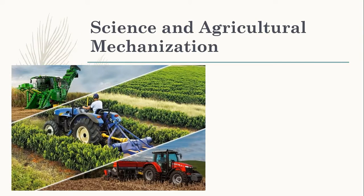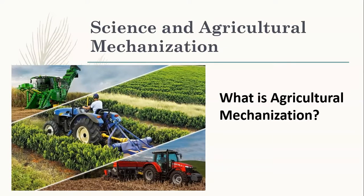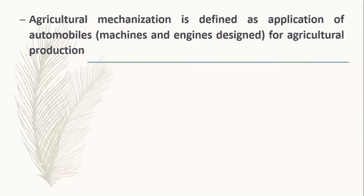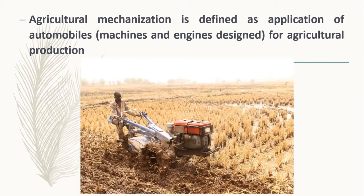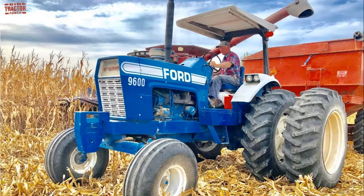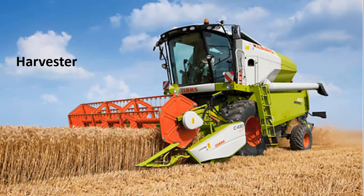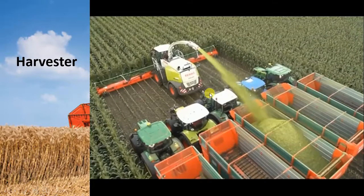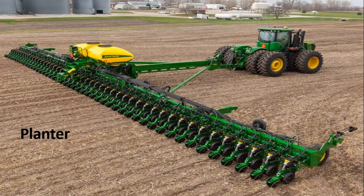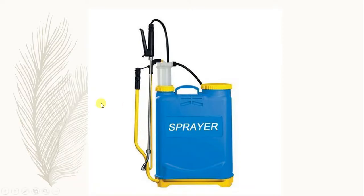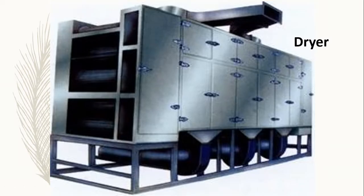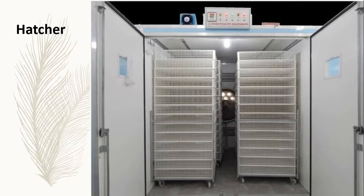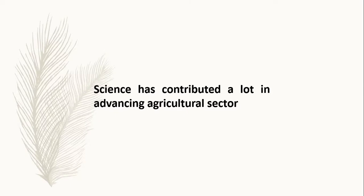Science and agricultural mechanization — agricultural mechanization is defined as the application of machines and engines designed for agricultural production. Examples of these machines include tractors, harvesters, planters, sprayers, sprinklers, dryers, incubators, and hatchers. These are examples of machines used for agricultural mechanization.